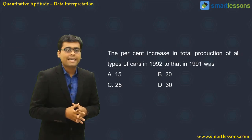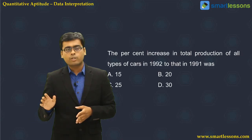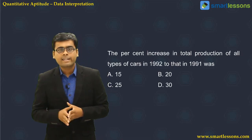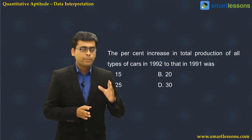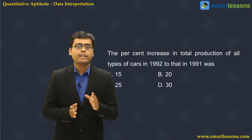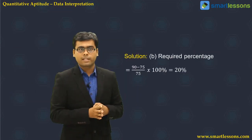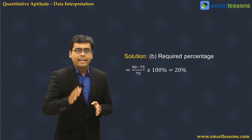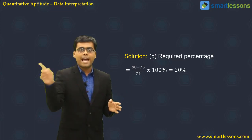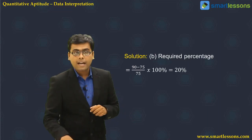Next: what was the percent increase in total production of all types of car in 1992 compared to 1991? The total production in 1991 was 75, and in 1992 it was 90. Percentage increase = (90 − 75) / 75 × 100 = 20%. So there was a 20% increase in production from 1991 to 1992. Option B is correct.